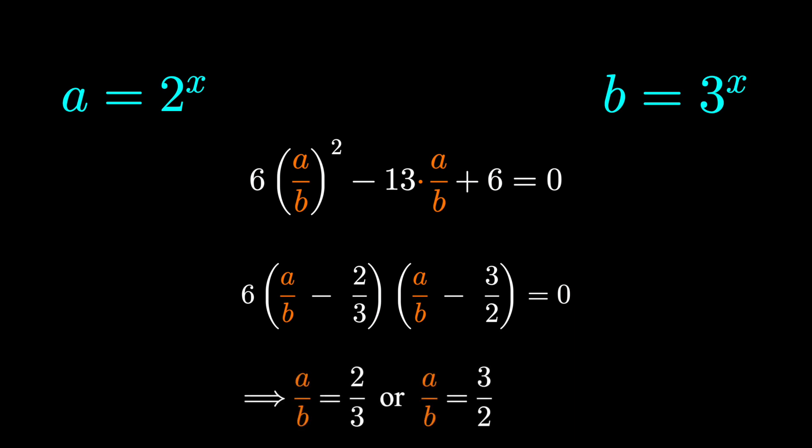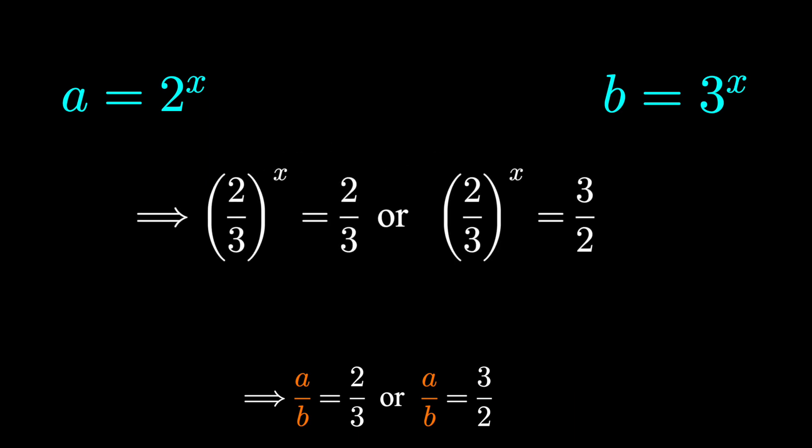Meaning the quantity a over b must be 3 halves or 2 thirds. What was a? It was 2 to the x. What was b? It was 3 to the x. So a over b is 2 to the x over 3 to the x. Or using properties of exponents, 2 over 3 all to the x.